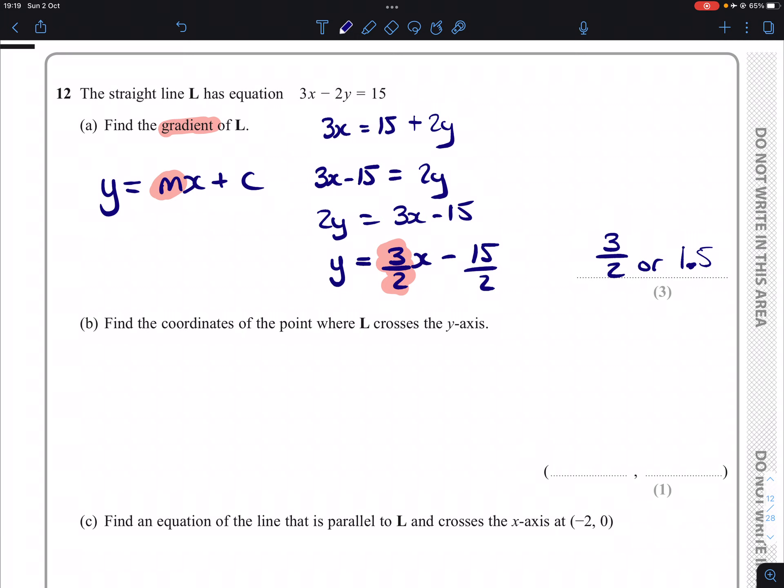Part B: find the coordinates of the point where L, that is our line here, crosses the y-axis. Well, the y-axis intercept, or the y-intercept, is the value of c when it's written in y = mx + c form.